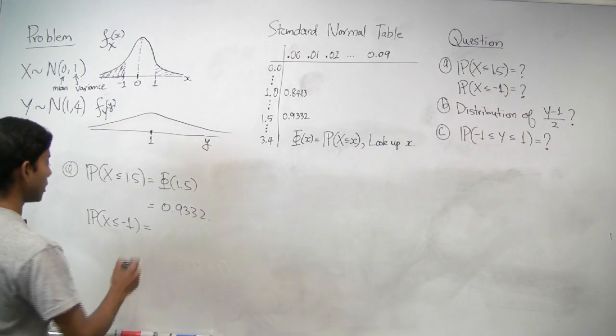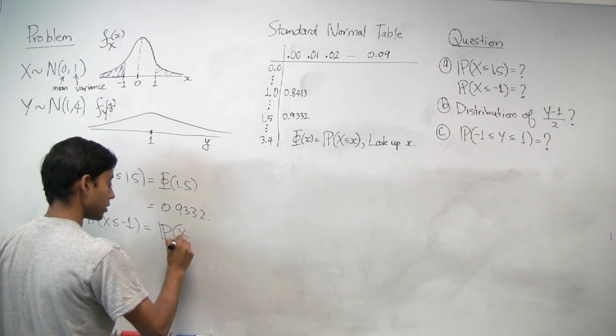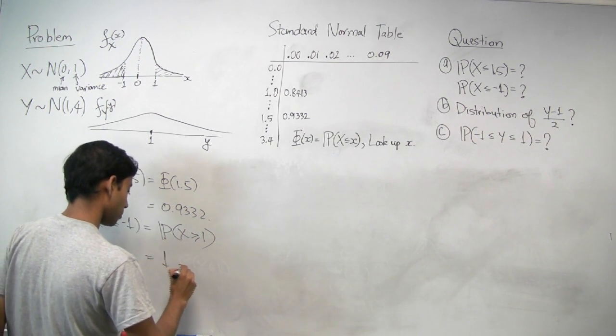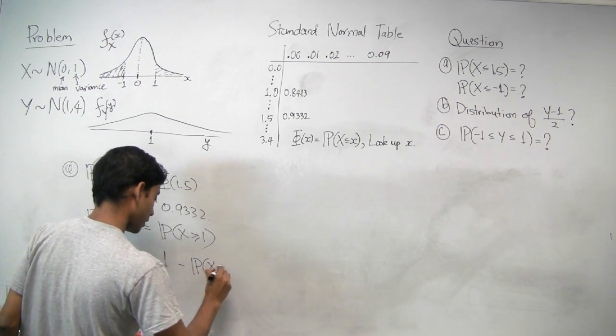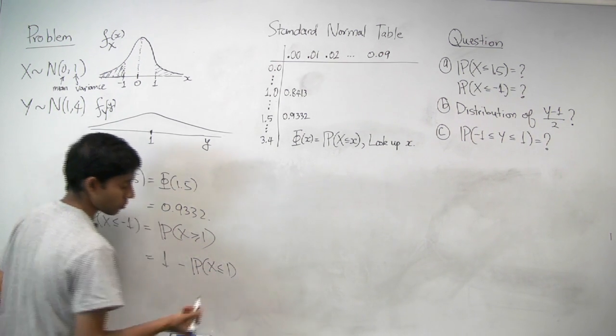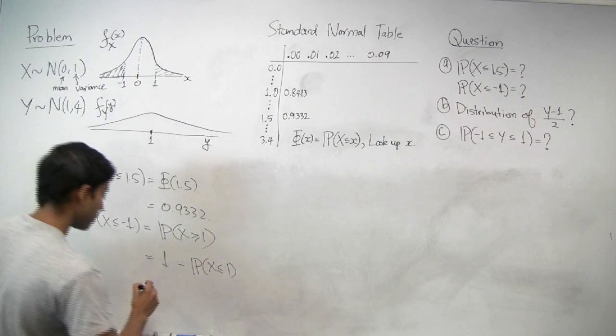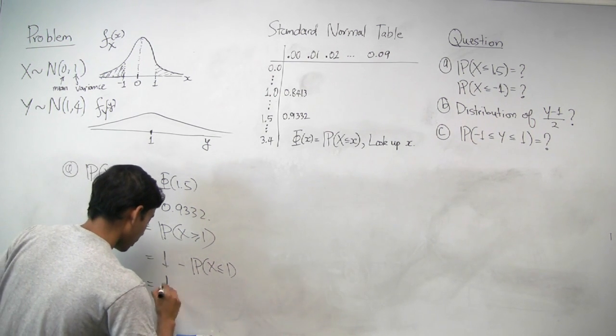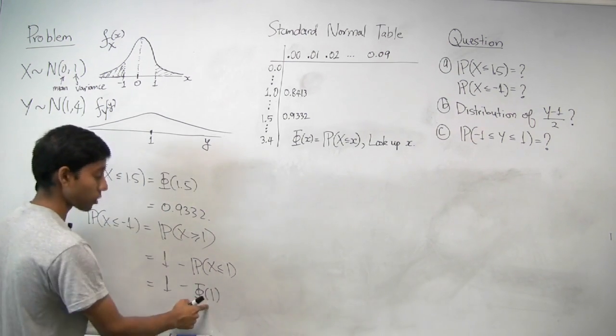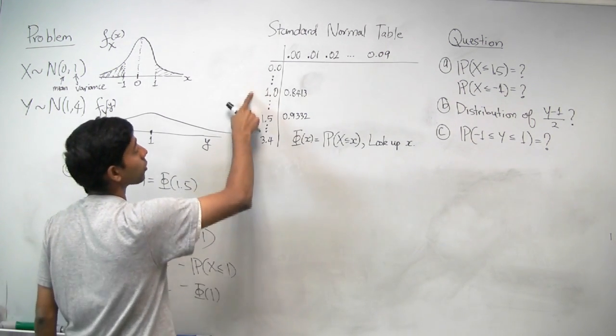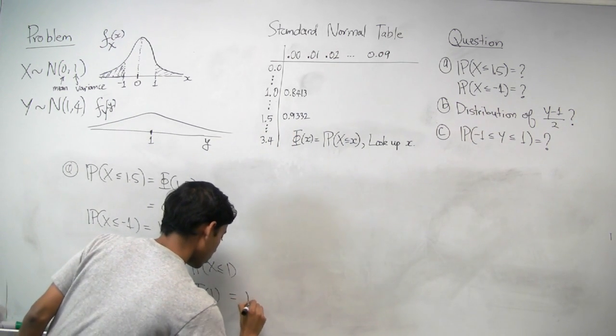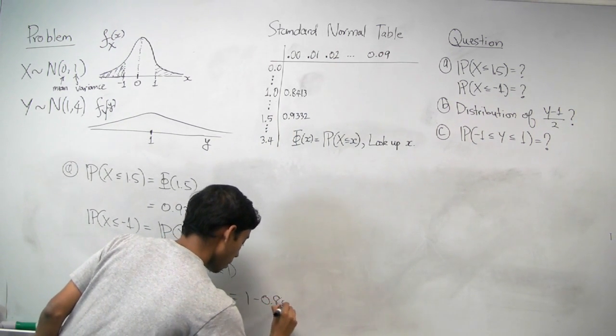And so that's equal to the probability that X is greater than or equal to 1. This is equal to 1 minus the probability that X is less than 1. And we can put the equal sign in here because X is continuous. It doesn't matter. And so we're going to get this is equal to 1 minus phi of 1. And we can look up phi of 1, which is 1.00 and that's 0.8413.